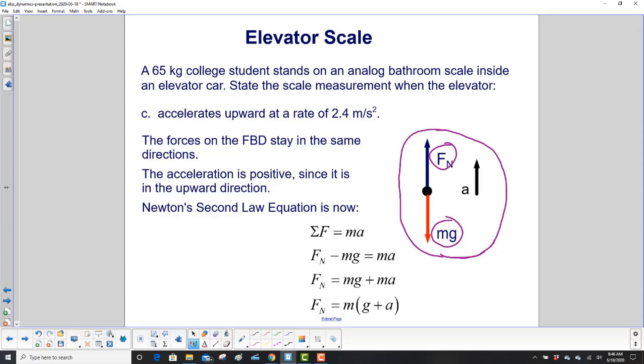So the sum of the forces is ma. Normal is in the upward direction. Positive mg down. Acceleration is up. That's positive. We put mg on the right side by adding plus mg to the left side and the right side. And then we factor out the m. So we only have to multiply by m once to get the answer.